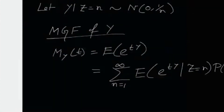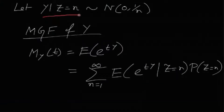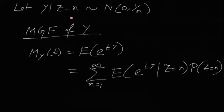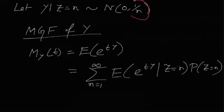Now let us define another random variable. Let Y given Z equals n follow Normal(0, 1/n). That means Y given Z equals n — this is the conditional distribution of Y given Z, not just Y — follows a normal distribution with mean 0 and variance 1/n.